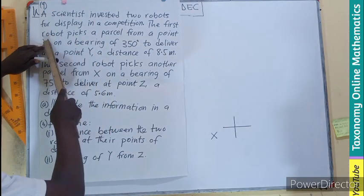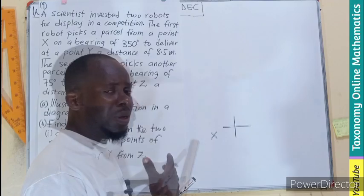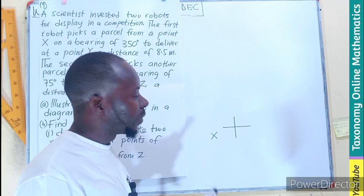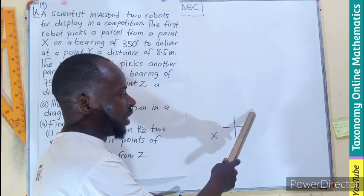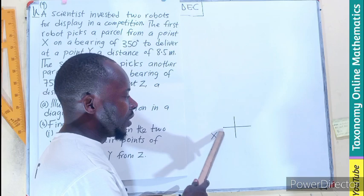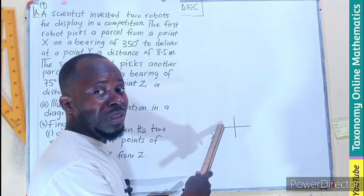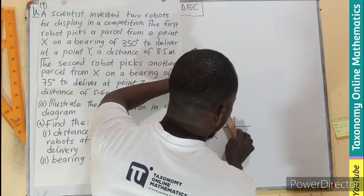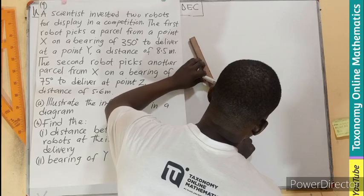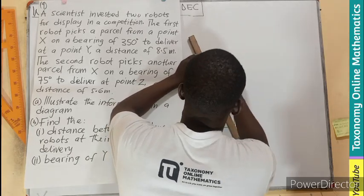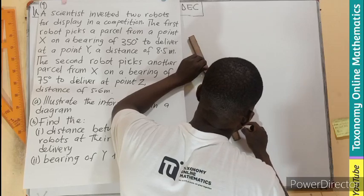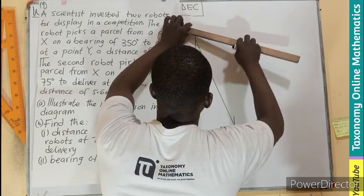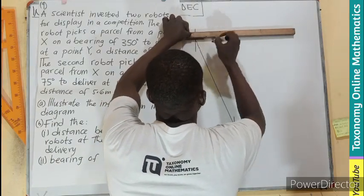If this is the first point where we indicate point X. Now, the parcel is picked from point X on a bearing of 350. Remember that the bearing is measured in clockwise direction from the north pole of your point where you are. So we are at this point, the north, measuring 90, 180, 270. We are way up to 350, meaning we need extra 80. So 80 could be taken from here.